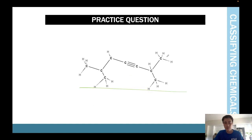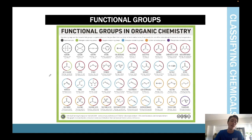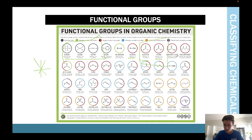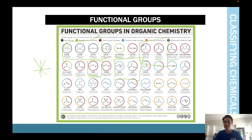Here are some additional practice questions you can try in your own time. Quickly, these are functional groups — the next step after hydrocarbons. In year 11, you'll go through haloalkane, alcohol, carboxylic acid, ester, and possibly ether. In year 12, you'll cover aldehyde, ketone, amine, amide, and ether. These are what you'll learn over the next two years.